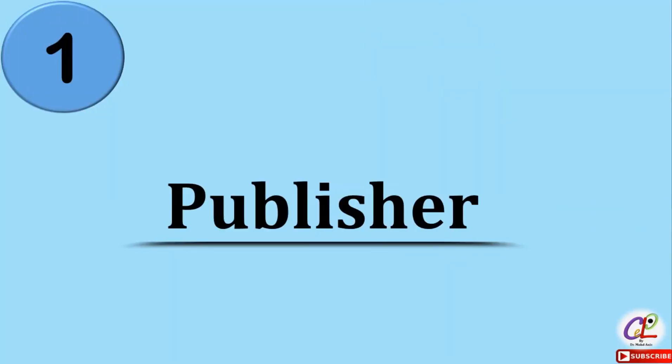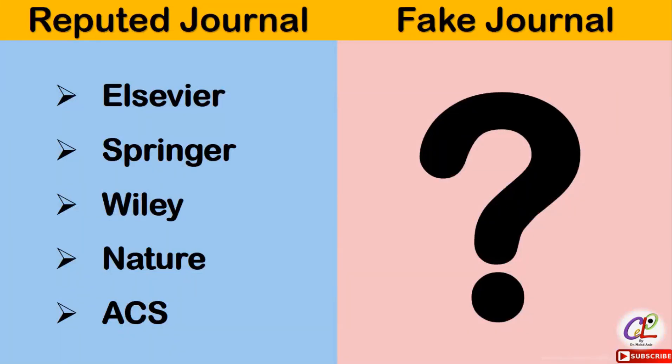The very first thing you need to know is the publisher of the journal. The journal should have a reputed publisher such as Elsevier, Springer, Wiley, etc. The journal may have a local publisher which is reputed as well. You need to identify whether the journal has a renowned publisher or not. In case of fake journals, it can have any publisher which does not have any credibility in publishing research journals or research material.